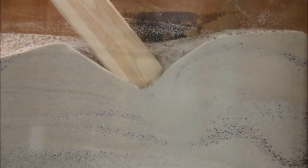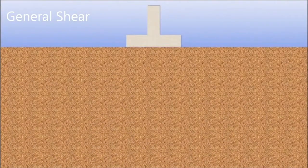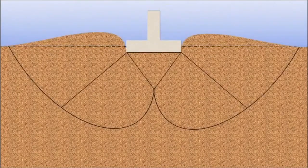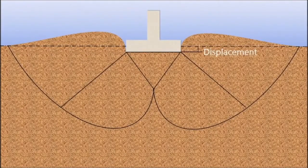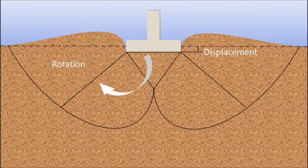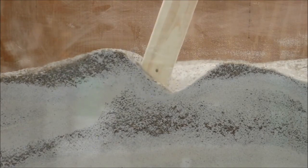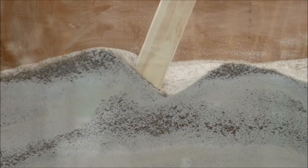General shear failure occurs in dense cohesionless soils and undrained cohesive soils. General shear failure is characterized by a well-defined shear plane with clear disturbances in the soil surface. This type of failure occurs suddenly and can cause significant rotation of the structure as you can see in this video.